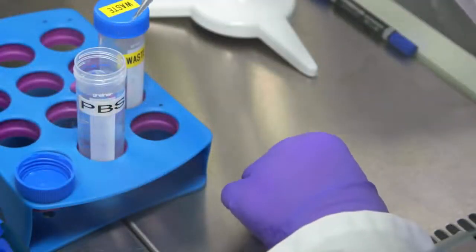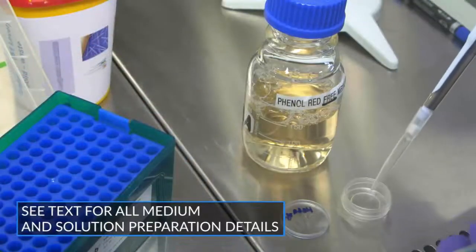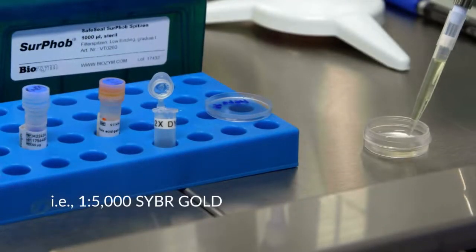The next morning, wash the cells in 2 milliliters of PBS before adding 1 milliliter of phenol red-free culture medium and 1 milliliter of the appropriate 2X labeling solution.